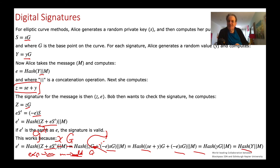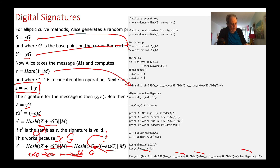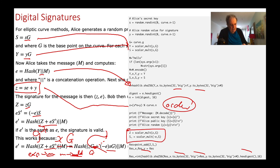In elliptic curves, exponentiation becomes scalar multiplication and multiplication becomes point addition. The computation proceeds the same way and we end up with the same result. In the code, we hash two points — our public key points. We take SE*Y and do mod N where N is the order of the curve, performing all operations in terms of the curve's order.